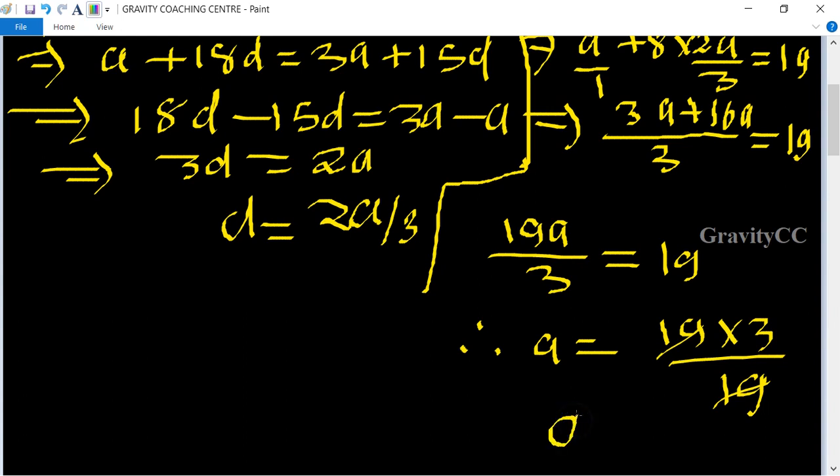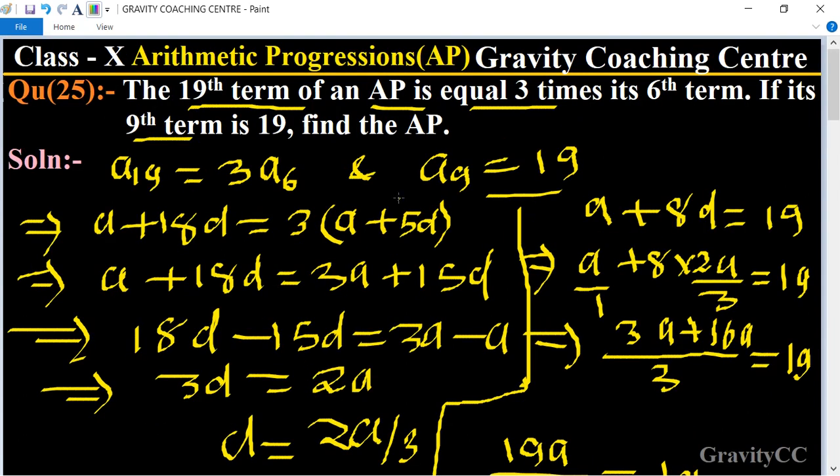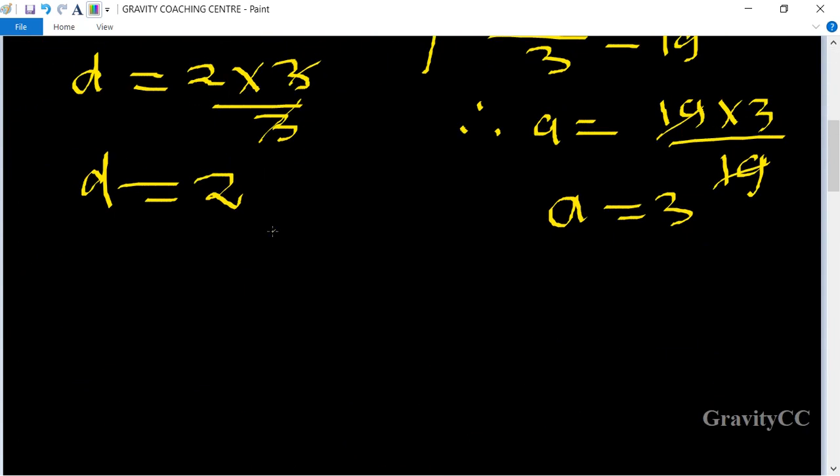So 19 cancels, giving a equals 3. And since d equals 2a upon 3, the value of d is 2. Now we find the AP. First term equals a, which means 3, and the value of d is 2.